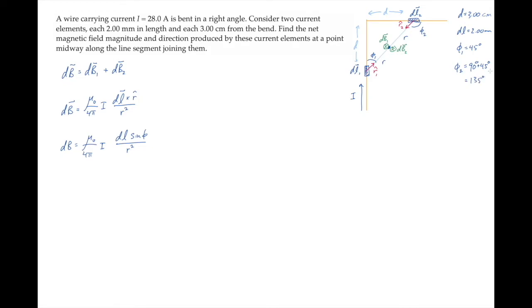We can evaluate the square of the distance between the current element and the field point by looking at this right triangle. There are two equal sides, and we need the square of the hypotenuse. Each side is half of the distance d, so r squared works out to twice d over 2 squared, which is 4.5 times 10 to the minus 4 square meters.